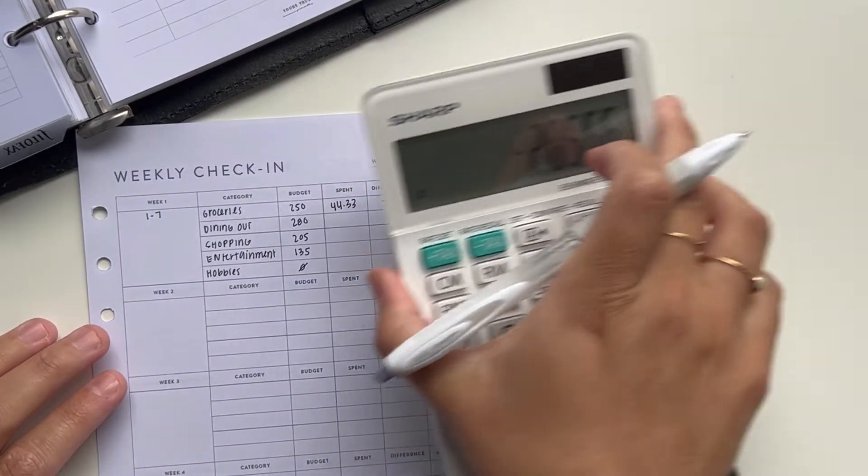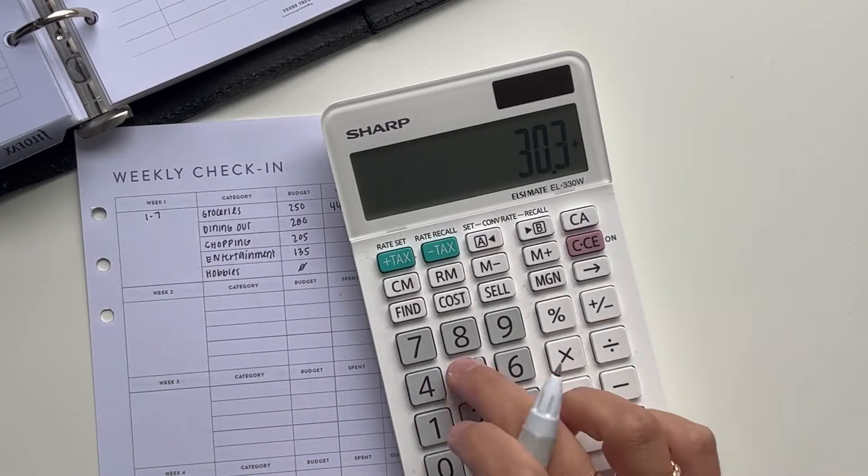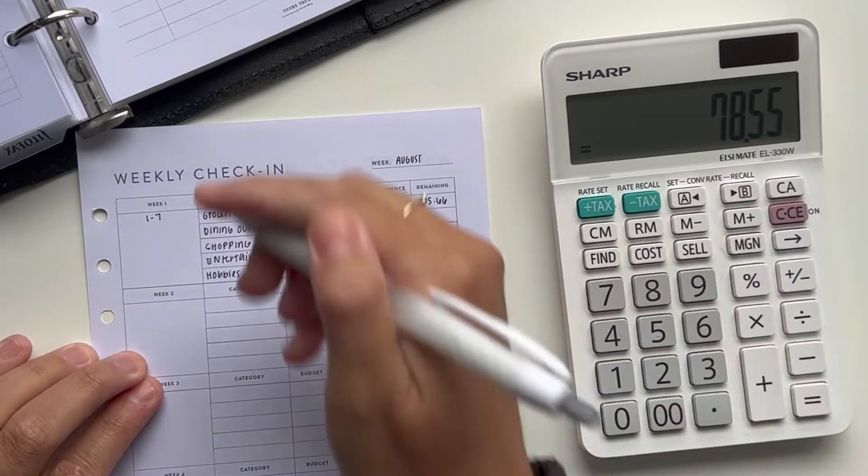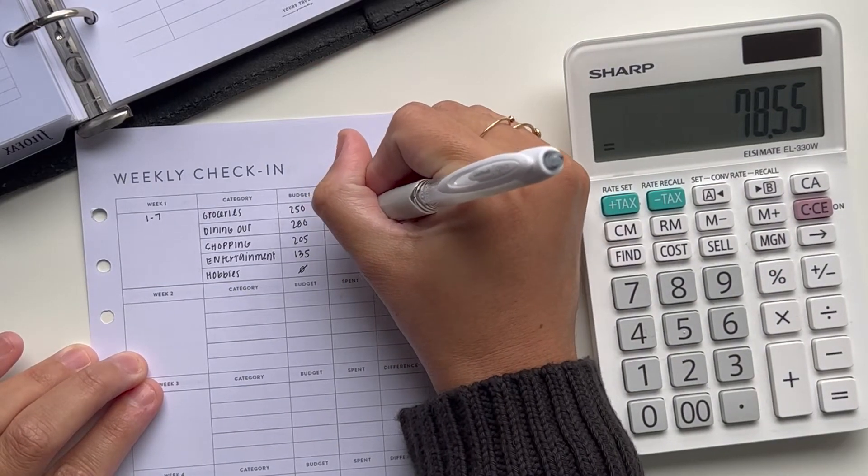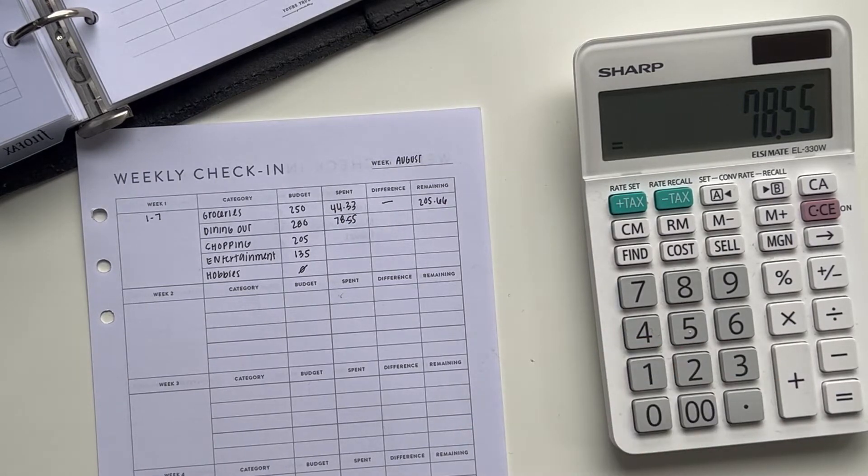Next is dining out. There were quite a few dining out outings, I guess, or expenses just because we did have my boyfriend's dad visiting us for a couple of days. So $78.55 is what I've spent the first week, which I think it's a lot for one week. That is a lot, yes. But like I said, we had a visitor and so that caused us to obviously eat out a little bit more. One of the days, his dad actually treated us to breakfast and then dinner that day. So it could have been worse.